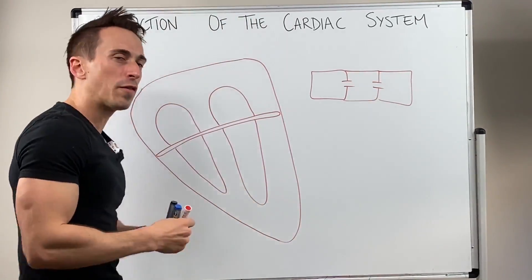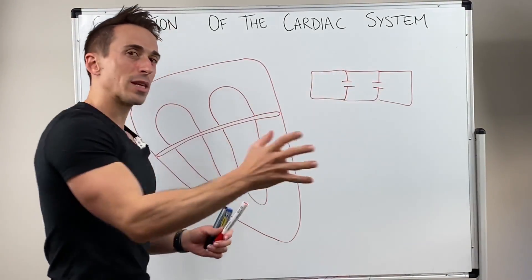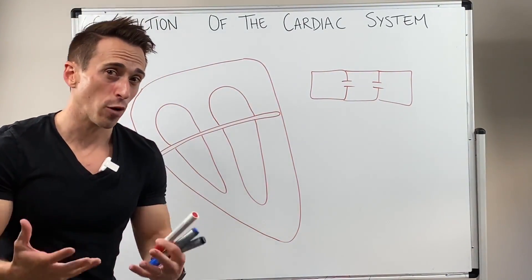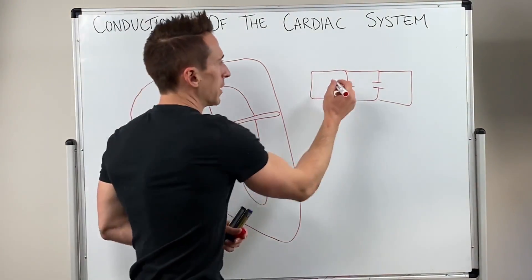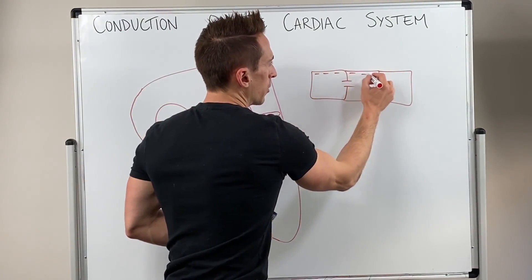This is important because these cells, like any excitable cell of the body like neurons, at rest have a negative charge associated with them.